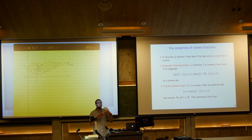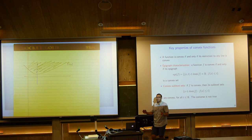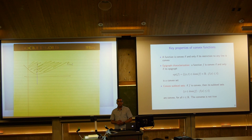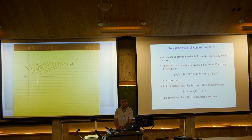However, the converse is not true. If all sublevel sets are convex, the function itself may not be convex. Who can think of a counterexample — a function whose sublevel sets are all convex but the function itself is not convex? Square root of x is a good example. We could even reflect it around the x-axis — that function has all convex sublevel sets, but it's not convex.